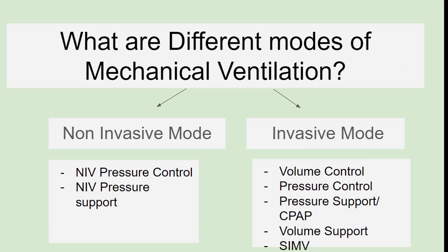What are the different modes of mechanical ventilation? It is non-invasive mode and invasive mode. The non-invasive modes are NIV pressure control mode and NIV pressure support mode. The invasive modes include volume control, pressure control, pressure support or CPAP, volume support, and SIMV — Synchronized Intermittent Mechanical Ventilation.